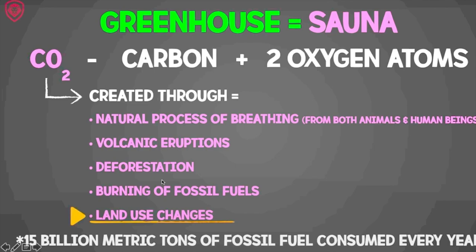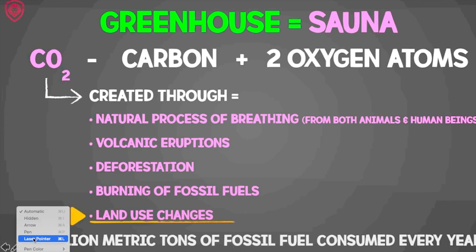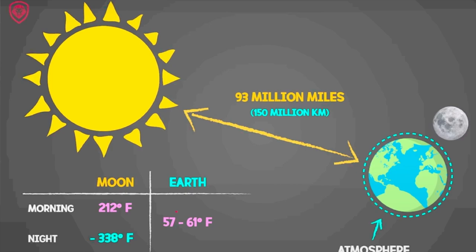We can see these are the sources of CO2. In one way, CO2 is important because it keeps the Earth warm. But the point is that 15 billion metric tons of fossil fuels are consumed every year. Think about it — every year, 15 billion metric tons. That produces so much CO2, and this extra CO2 is affecting the Earth.